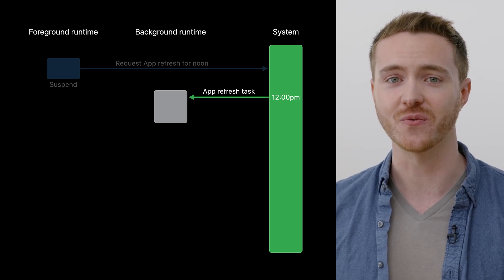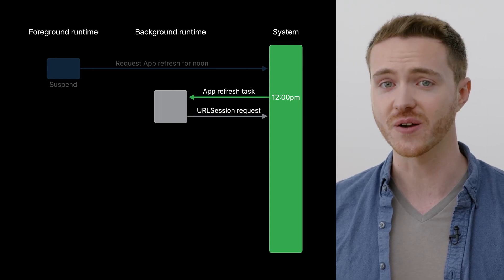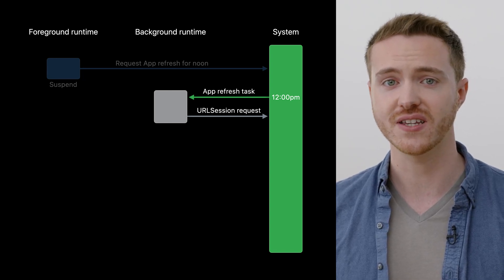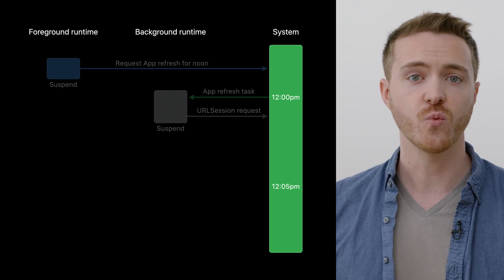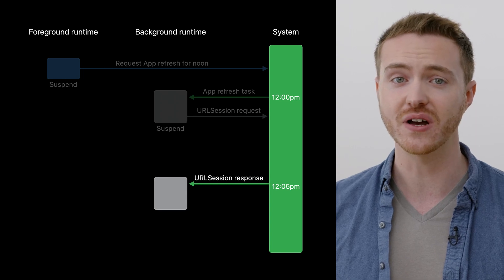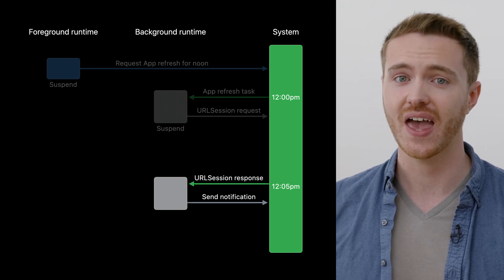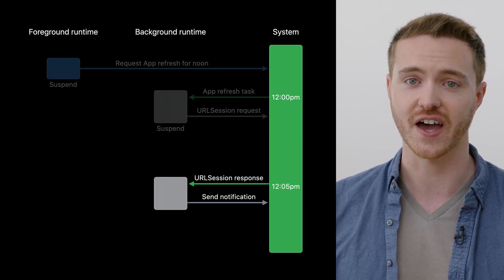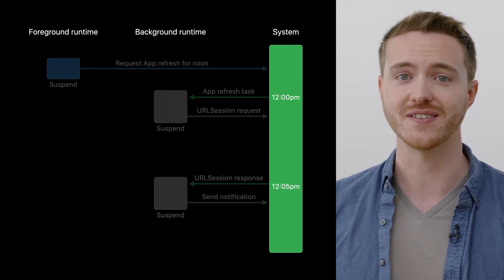With this background runtime, we need to figure out whether it's stormy outside, and if it is, send a notification to the user. We'll make a network request to a weather service to check the current weather. With the URL session scheduled for background, the application can suspend and wait for the network request to complete. When the background network request for weather data completes, our application will be given background runtime again with a new URL session background task. With the results in hand, our application knows whether it's stormy outside and can choose whether to send a notification prompting the user to take a photo of the sky. Now that our work for the URL session task is done, the system can once again suspend the application.